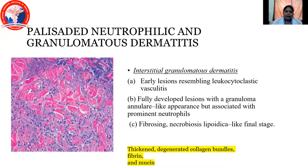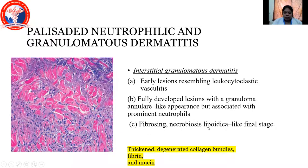Coming to palisaded neutrophilic and granulomatous dermatitis, there is an entity within it called interstitial granulomatous dermatitis. It has an early lesion resembling leukocytoclastic vasculitis, a fully developed lesion with granuloma annulare-like appearance but with prominent neutrophils, and a fibrosing necrobiosis lipodica-like final state. The microscopic picture shows thickened and degenerated collagen bundles with fibrin and mucin around them.